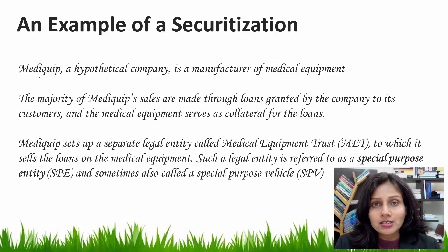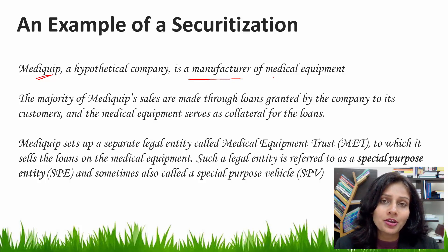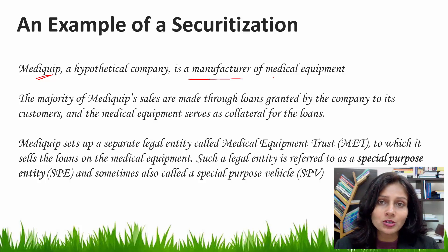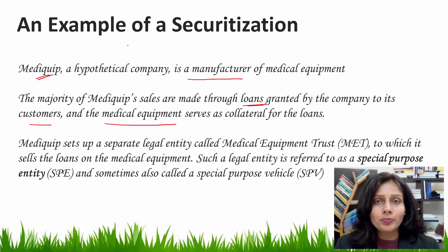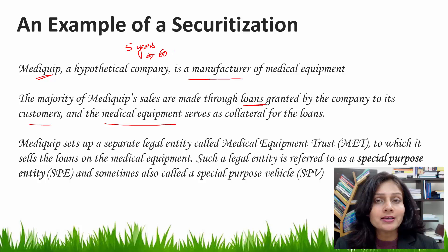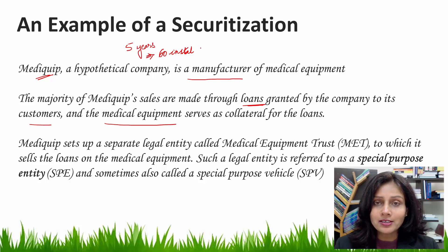Let's assume that there is a hypothetical company by the name of MediCube. MediCube is the manufacturer of medical equipment and its medical equipment typically ranges from $50,000 to $300,000. The majority of MediCube's sales are made through loans granted by the company to its customers, and the medical equipment sold serves as collateral to these loans. The loans are for a typical duration of five years in which they are fully amortized — that means through equal monthly installments comprising interest and principal, over 60 installments (12 months times five years), the company recovers the complete cost of the equipment.